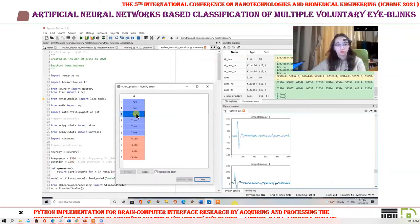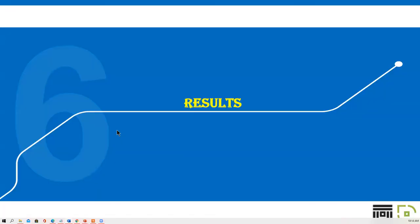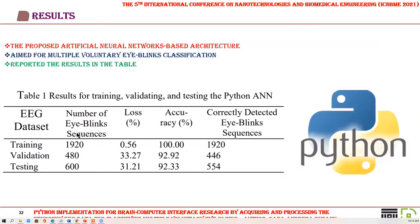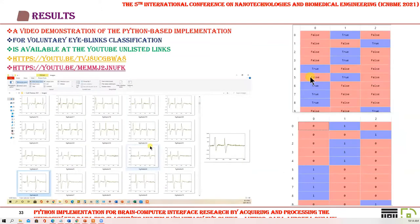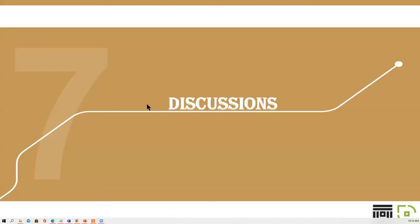The confusion matrix showed detailed results regarding the correctly and incorrectly detected samples from each of the three output classes: simple, double, and triple voluntary eye blinks. The proposed ANN-based architecture for multiple voluntary eye blink classification reported results shown in the table. A video demonstration of the Python-based implementation for voluntary eye blink classification is available at two YouTube unlisted links.